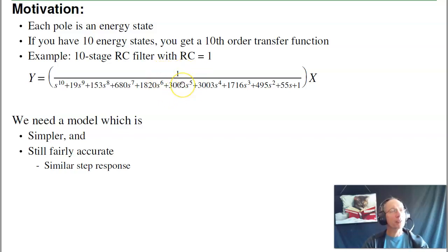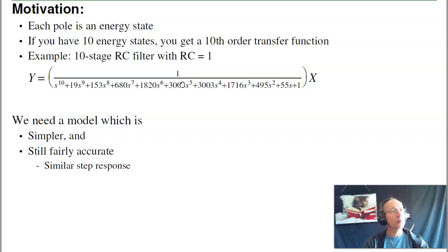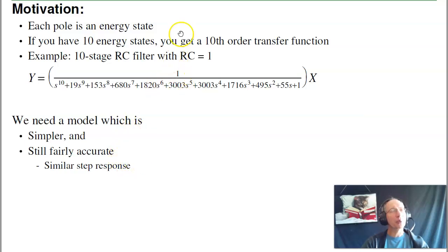If I look at a transfer function and said by inspection, what's the step response? I really have no idea. So there's a trick. When you have a dynamic system, there are a few poles that really dominate the response — those are the dominant poles. What I'd like to do is take this system and come up with a model which is simpler but still fairly accurate and has a similar step response. Keeping the same dominant pole does that.